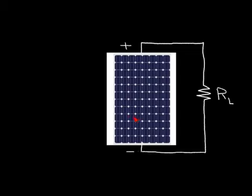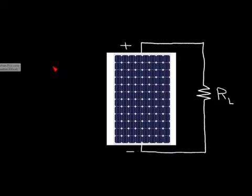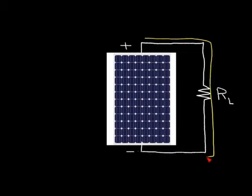In this video I want to explain the electronics of solar panel shading and solar panel hot spots. In this picture we have a typical solar panel with a lot of individual cells that are connected in series. We have a plus terminal, a minus terminal, and a load resistor across the panel called RL. Each solar cell is receiving very bright sunlight, so we have a current flowing from plus to minus through this load resistor. I'm going to use the convention of positive current — the electrons actually flow the opposite direction, but it doesn't really matter.